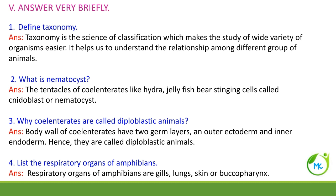What is nematocyst? In case of Coelenterata, their tentacles are found in the mouth part. They have stinging cells. Those stinging cells are referred to as nematocysts, otherwise referred to as cnidoblasts.